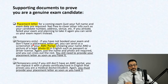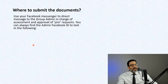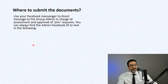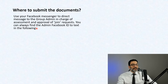Okay, so you have your documents, you have your genuine Facebook ID, and the last thing you need is an invitation to the group. But before I get there, let me answer a very important question most of you have asked us: where do you submit your documents? You can use Facebook Messenger to direct message the group admins who are responsible for approval of your join requests. It's easy to find those IDs.